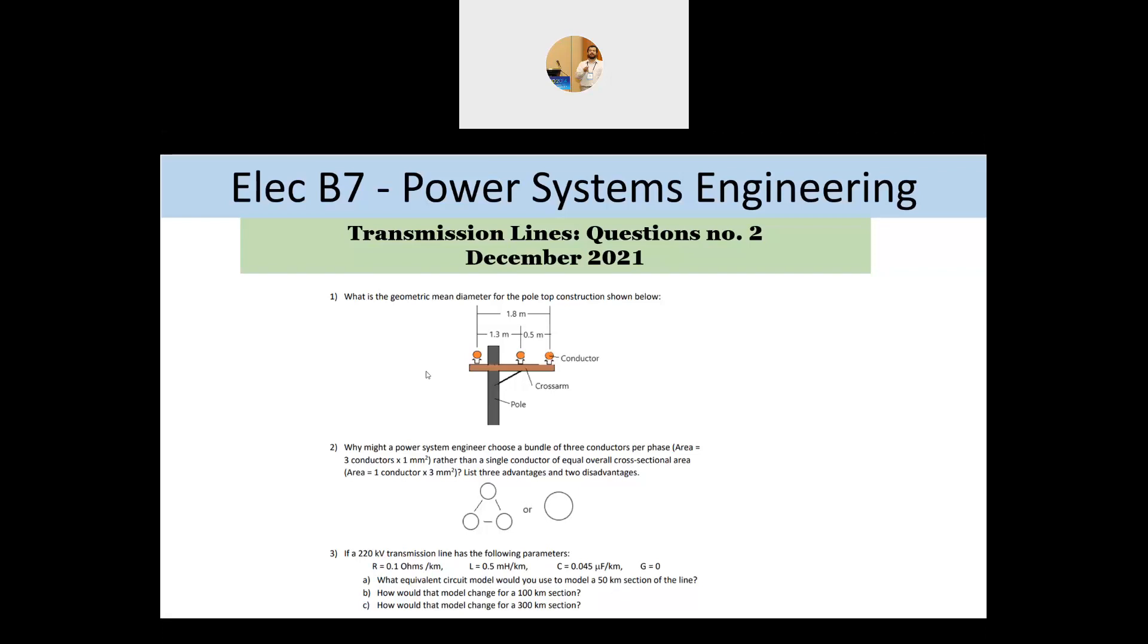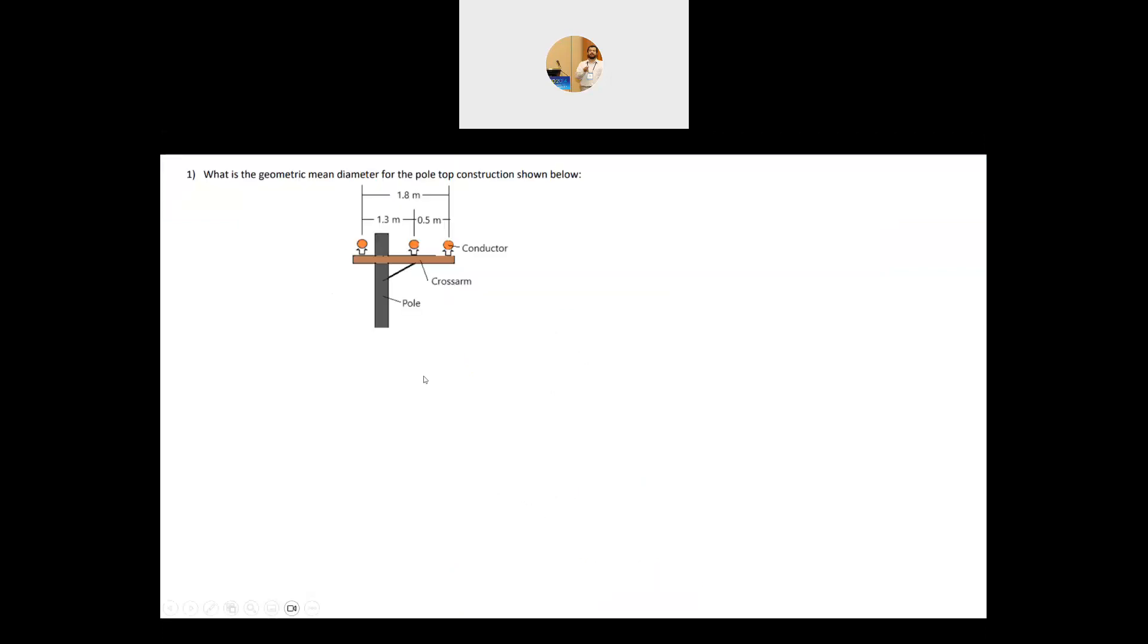We start with the first one. It says here what is the geometric mean diameter of the pole top construction. So we have here a pole top overhead lines and we have here the conductors and the distance between them is given between each conductor and these are mounted on a cross arm.